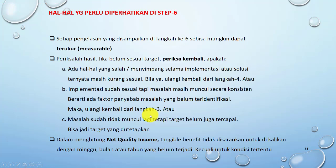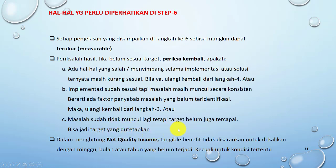Hal yang perlu diperhatikan di langkah ke-6: sebisa mungkin setiap penjelasan adalah terukur. Periksa hasil apakah sesuai dengan target. Adakah yang salah atau menyimpang selama implementasi, atau solusi ternyata masih kurang — bila iya, kembali dari langkah ke-4. Atau implementasi sudah sesuai tapi masih muncul masalah secara konsisten, berarti ada penyebab yang belum teridentifikasi — maka ulang dari langkah ke-3. Atau masalah sudah tidak muncul tetapi target belum tercapai, bisa jadi target yang ditetapkan belum sesuai. Dalam menghitung net quality income, tangible benefit tidak disarankan untuk dikalikan atau dijumlahkan dengan minggu, bulan, dan tahun yang belum terjadi, kecuali untuk kondisi tertentu.